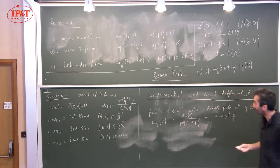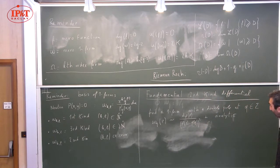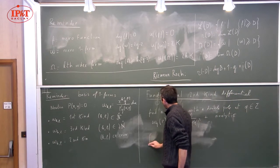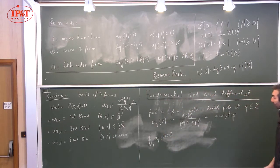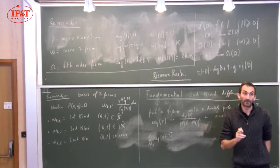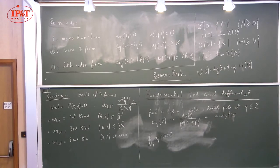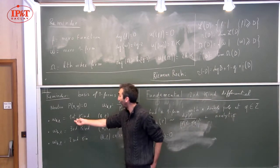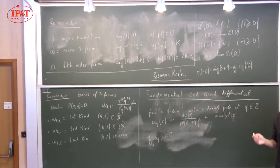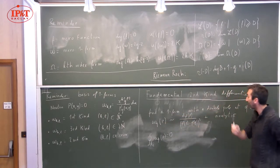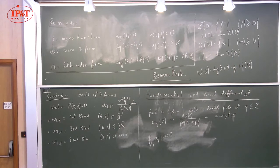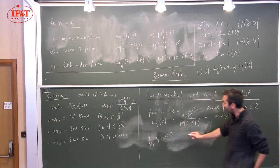Such a form does exist — last time I showed you how to construct one. You can even require that the integral over A_i of omega_Q of P equals zero. Such a form exists but is not unique, because you could add to it anything that has no poles — in particular, any linear combination of first-kind forms. There are G independent such omega_Q, so by fixing these conditions you make it unique.